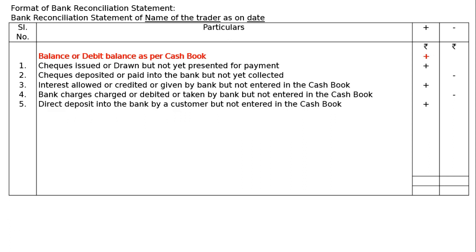The fifth item is a direct deposit into the bank by a customer but not entered in the cash book. Anyone can deposit into your bank account, increasing the pass book balance, but this may not be known to you. Hence, you have to increase the cash book balance to make it equal to the pass book balance.